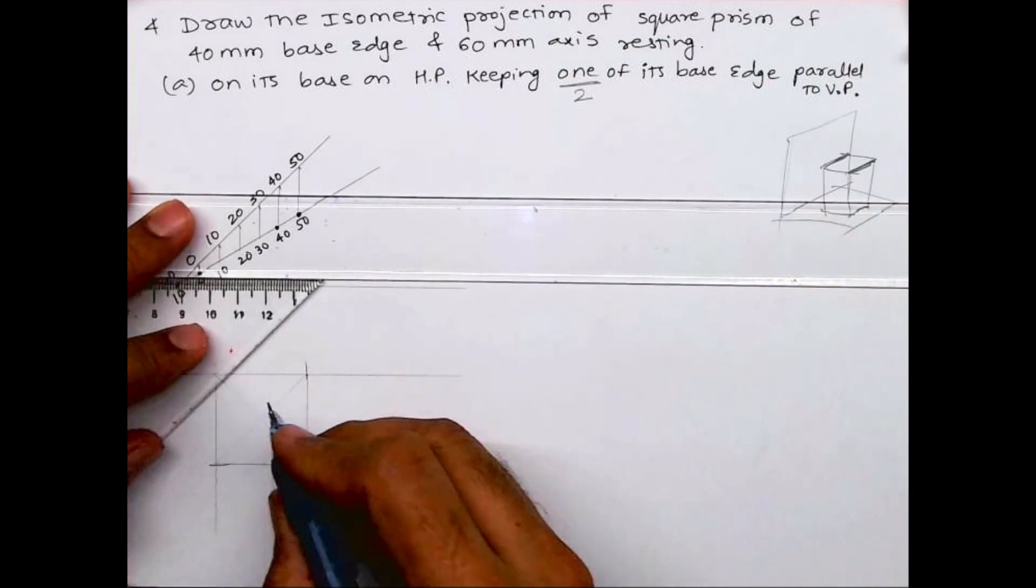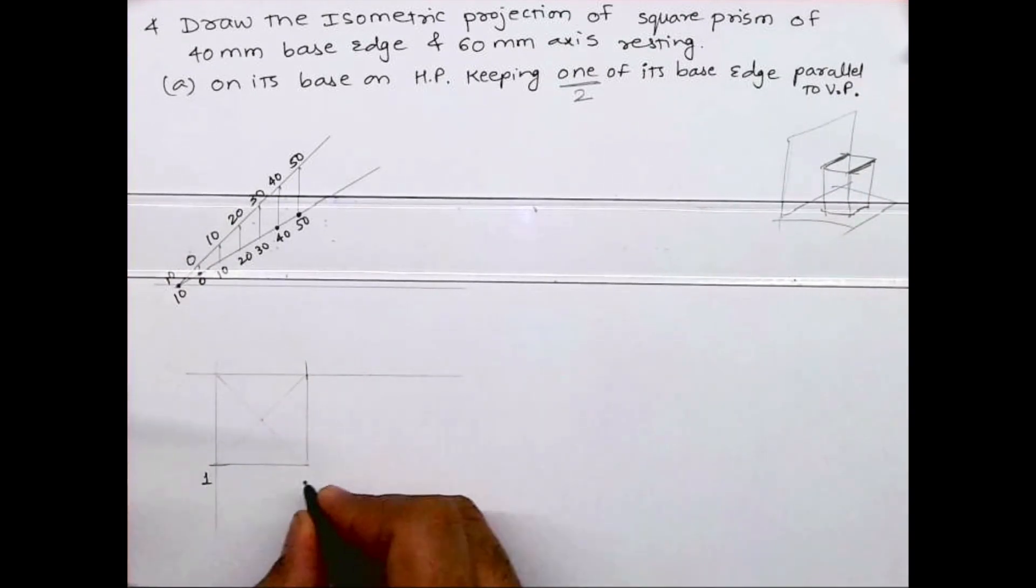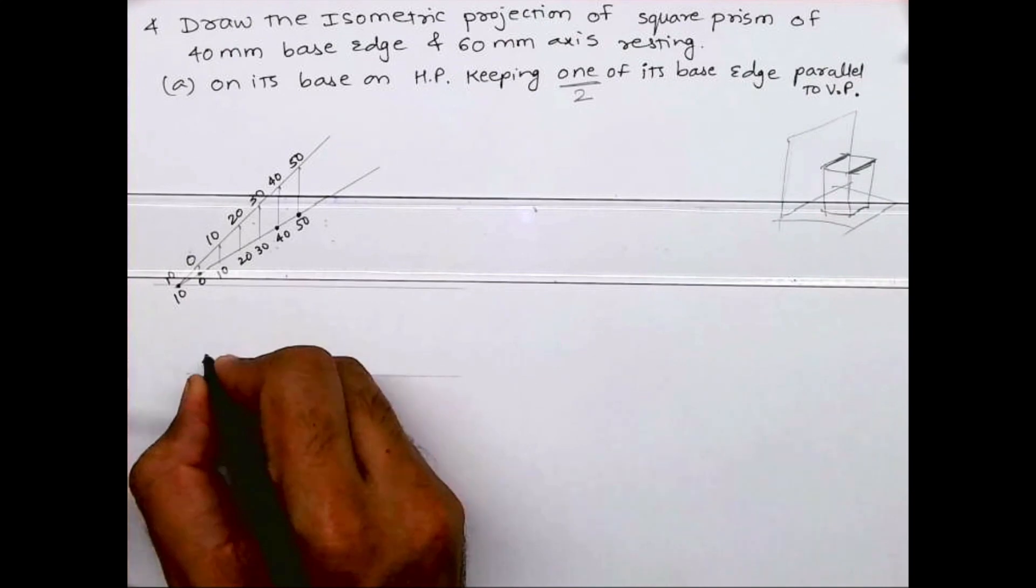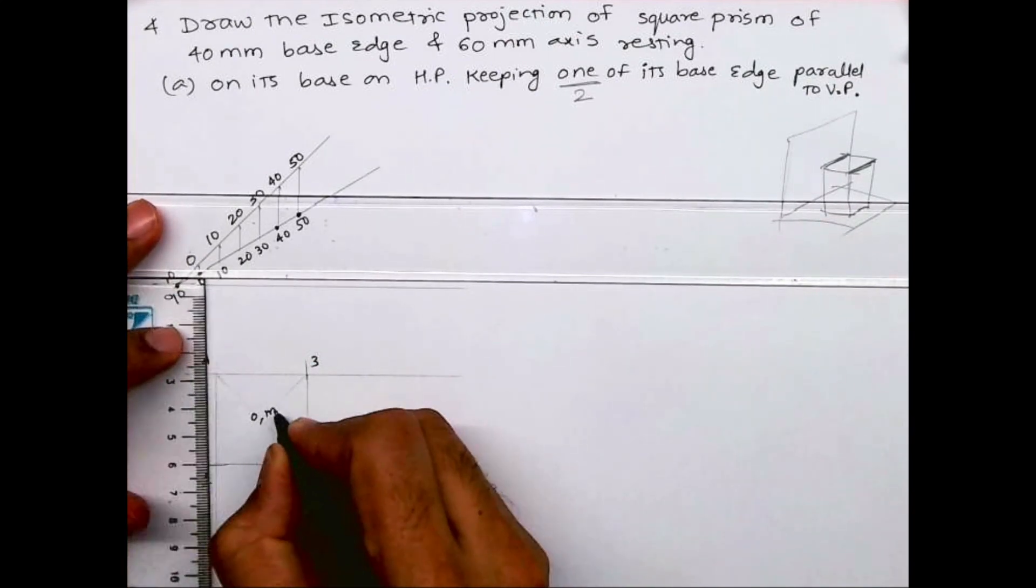So you've got the center point also. Now this is 1, 2, 3, 4 or A, B, C, D - whatever you want to write. And this is axis O, M.